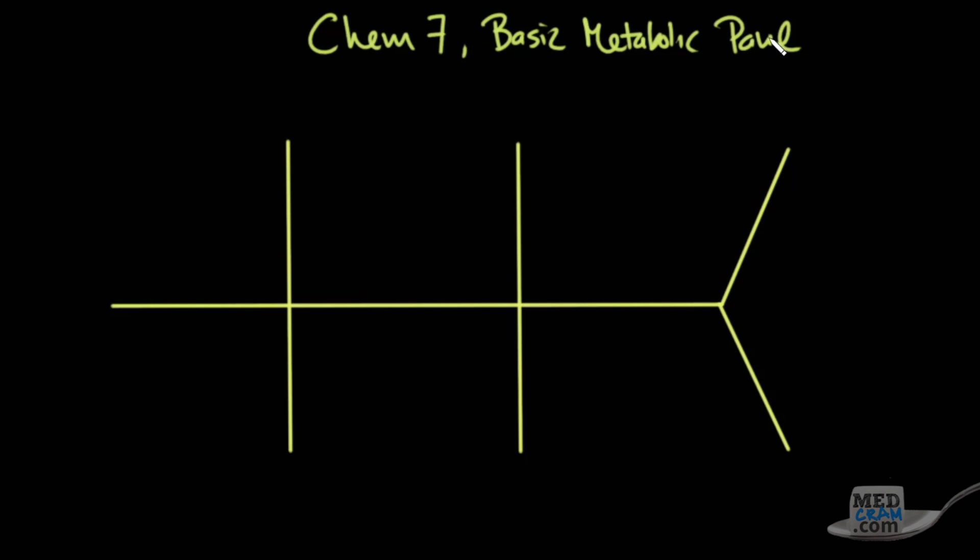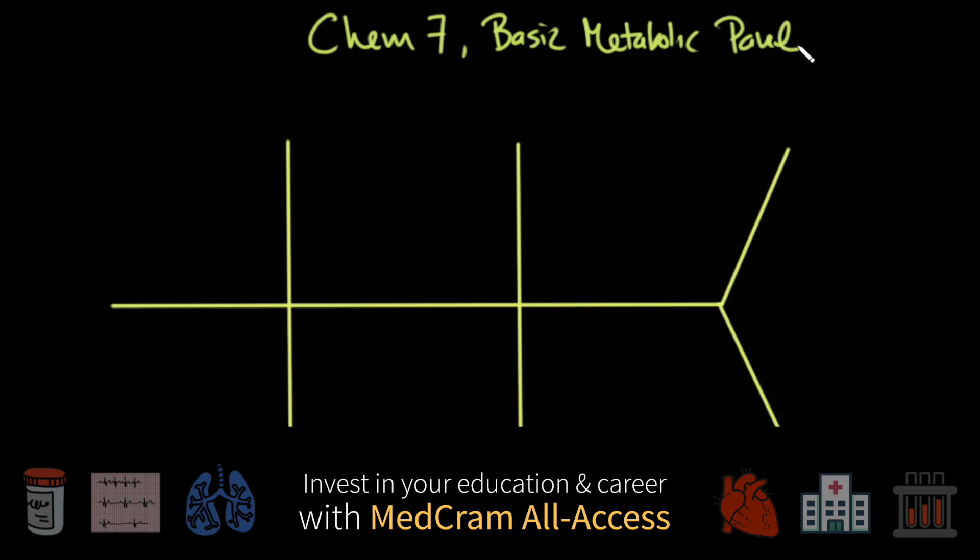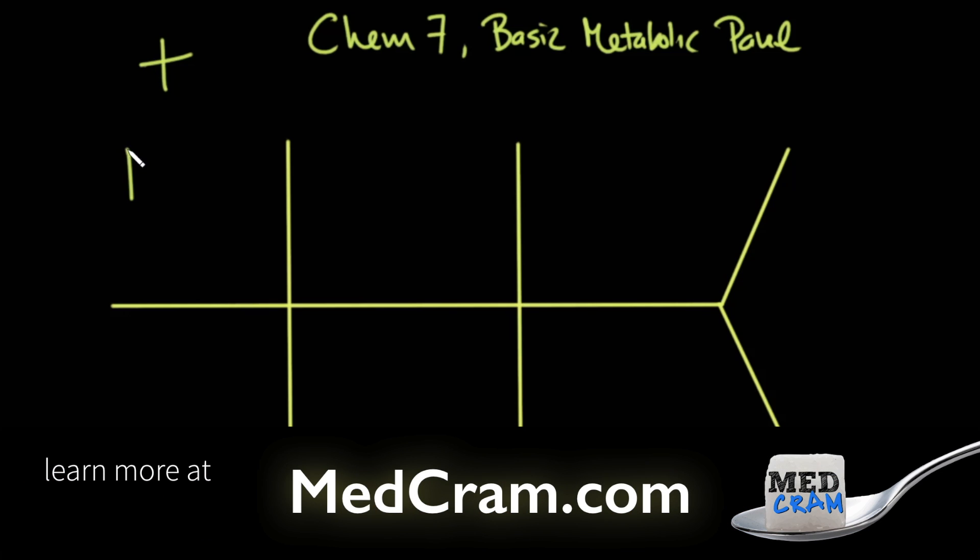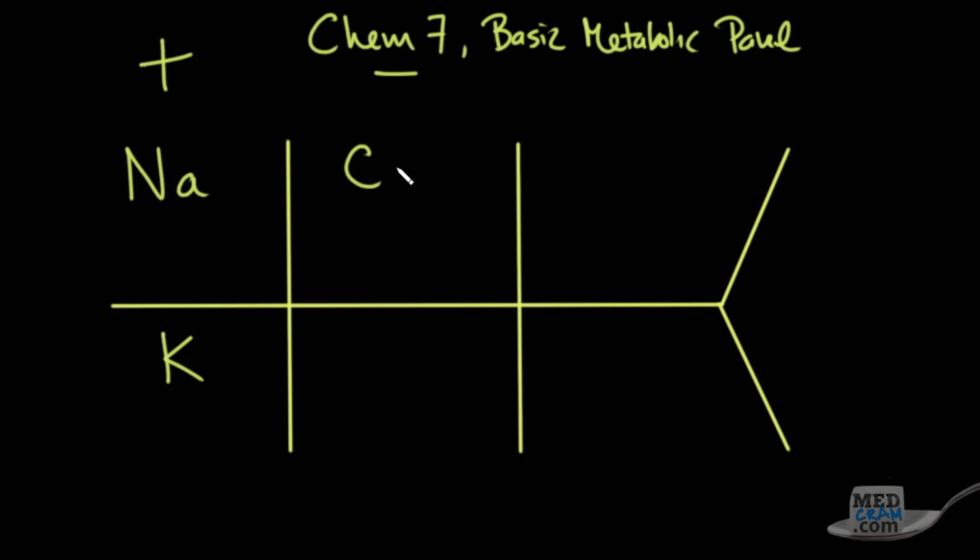And this is the structure that the CHEM 7, or basic metabolic panel, is usually delivered in. This first column here are the positive charges, and we'll talk about that. That's sodium and potassium. Those are the abbreviations. The middle column here are the negative charges, chloride and bicarbonate.